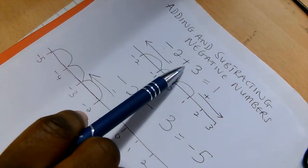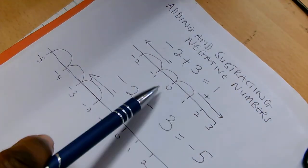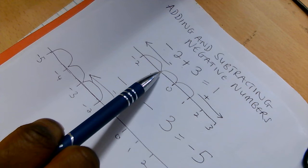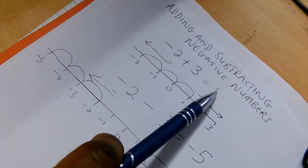So negative 2 plus 3 would mean your negative 2 is here. You're adding 3, you go that way, and your answer will be 1.